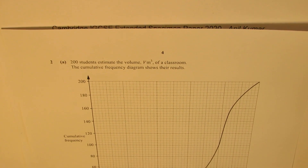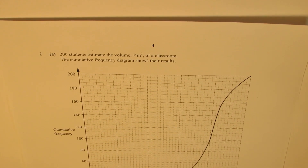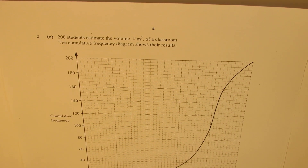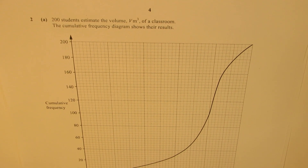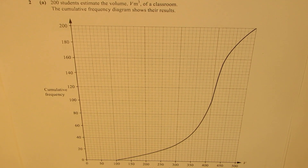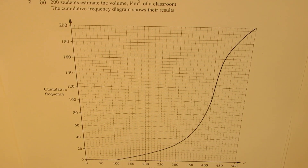The question is right here. There are 200 students who estimate the volume of a classroom. The cumulative frequency diagram shows the result. In this particular graph, you can see the cumulative frequency for the estimate of the volume. We need to analyze this graph and answer a couple of questions.